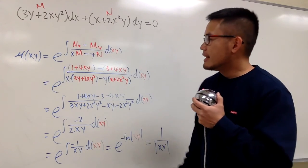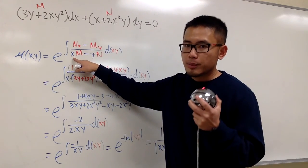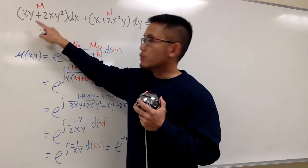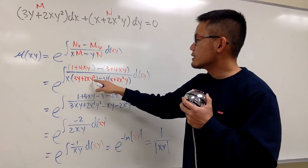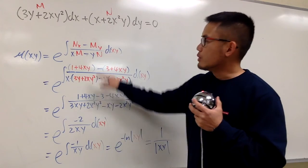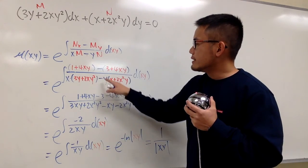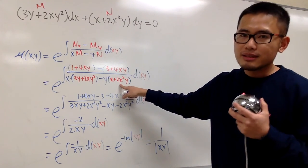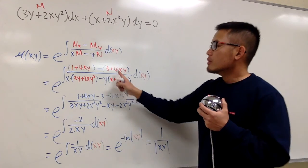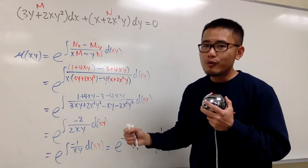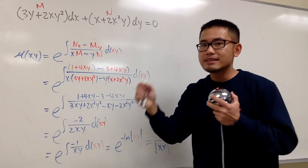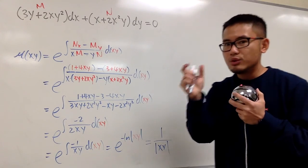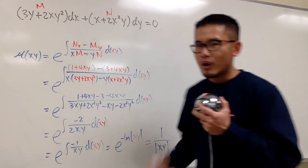In the denominator, this x is just the variable x — we maintain that x. And N is the original function, which we bring down: 3y plus 2xy squared. Then we minus, and this y is just y, and N is the whole thing, so we put that down. Now the rest is just algebra. After we cancel things out, hopefully this expression is a function of xy. We are integrating with respect to xy, treating it as one input — one variable.